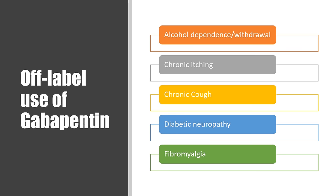Off-label — meaning this is not what it was originally studied for, but over time we have found that it helps — those uses include alcohol dependence and withdrawal, chronic itching, chronic cough, diabetic neuropathy (years of high blood sugar damaging the nerves), and fibromyalgia.